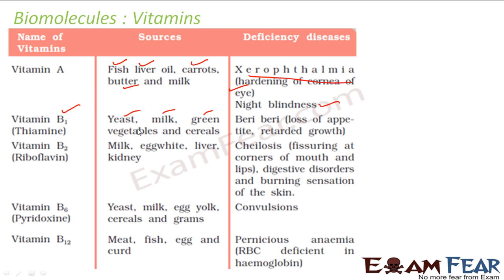Vitamin B1 is found in yeast, milk, green vegetables, cereals. If you don't take it properly, you will get beriberi - loss of appetite and retarded growth.